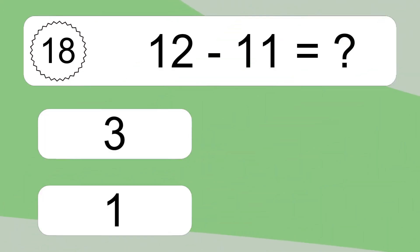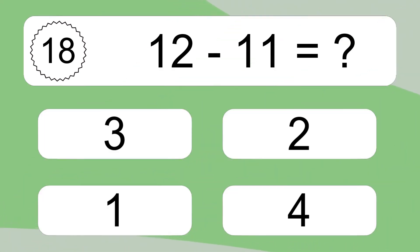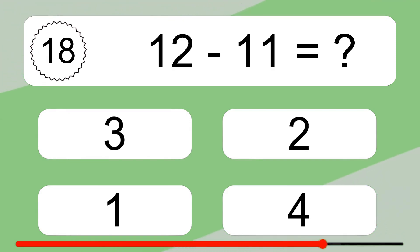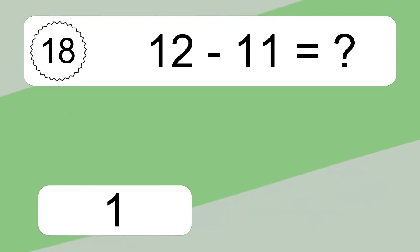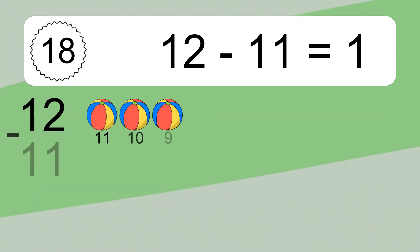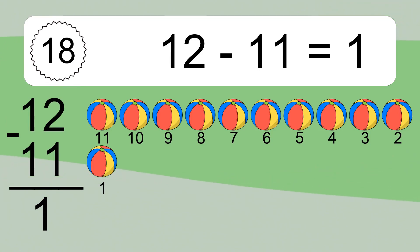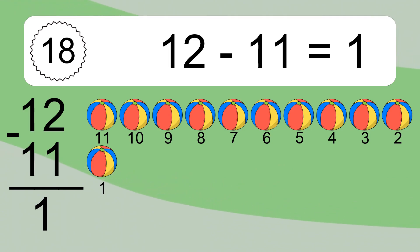12 minus 11 equals what? 12 minus 11 equals 1. Let's count it. 11, 10, 9, 8, 7, 6, 5, 4, 3, 2, 1.